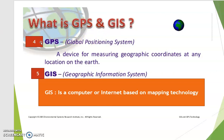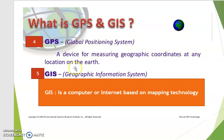The fourth tools geographers use are GPS and GIS. GPS stands for Global Positioning System. It is a device for measuring the geographic coordinates of any location on Earth. Geographers use GPS to identify places and locations, helping them track different positions from one place to another.